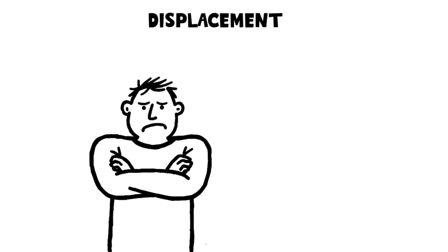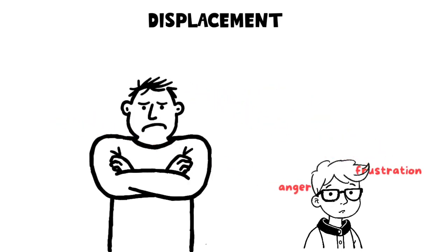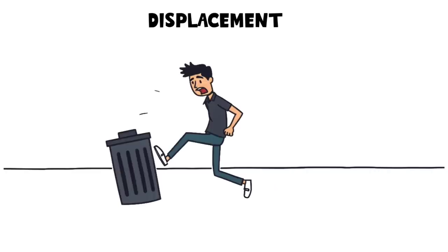Displacement. Displacement happens when emotions, especially anger or frustration, are redirected from the actual source to a safer, less threatening target. Kicking a chair after an argument with a boss is a classic example.